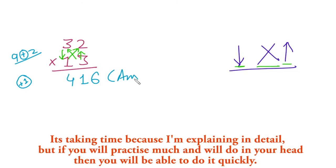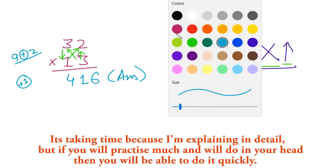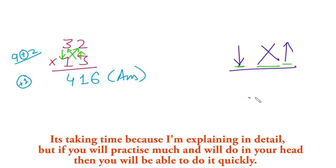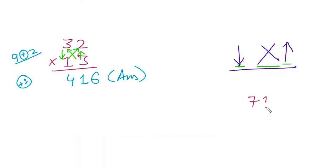Okay, so let's take another example like 71 multiplied by 21. Again, we will follow these steps. First we will multiply this number by this, so 1 multiplied by 1 is 1, so we write 1.